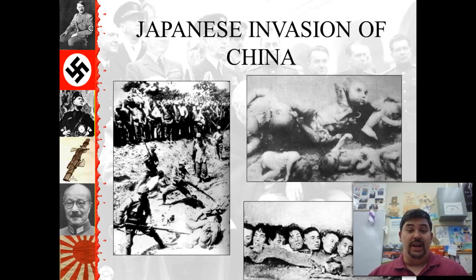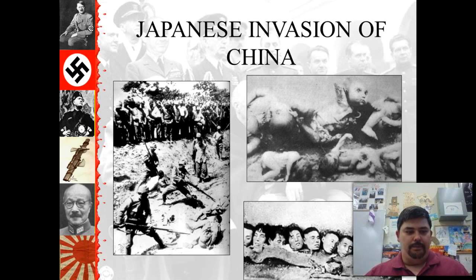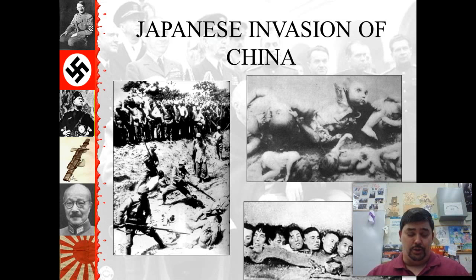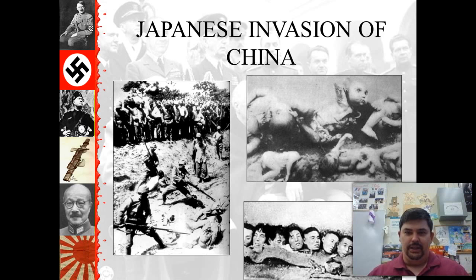Some people within the city who were international observers — people like John McGee, who was an American missionary, and even a Nazi named John Rabe — helped smuggle out film that McGee had taken. Rabe sent it to Hitler, who reportedly viewed it and then forbade it to ever be seen again. This is one of the worst things in history, and sadly not the only atrocity the Japanese army commits during World War II.